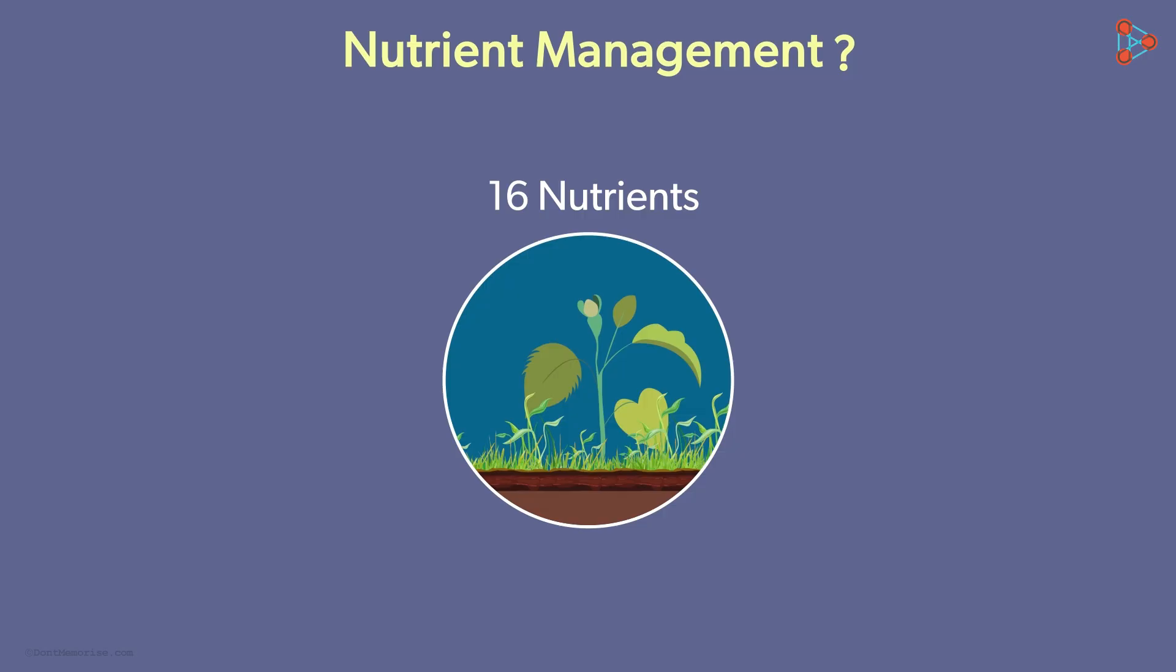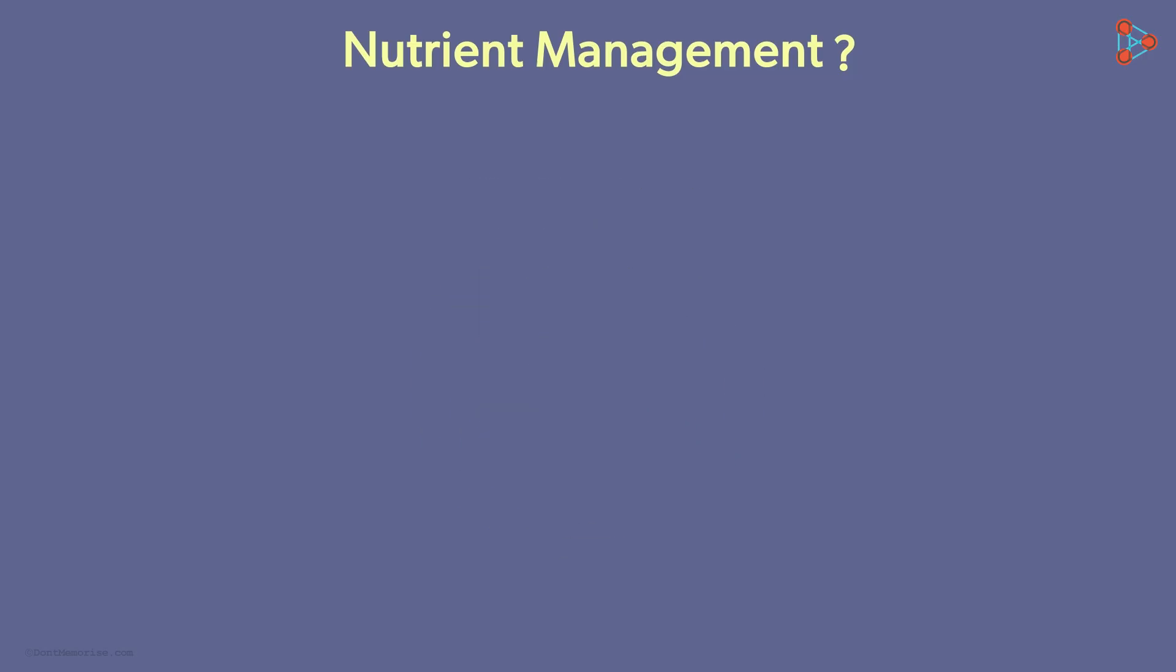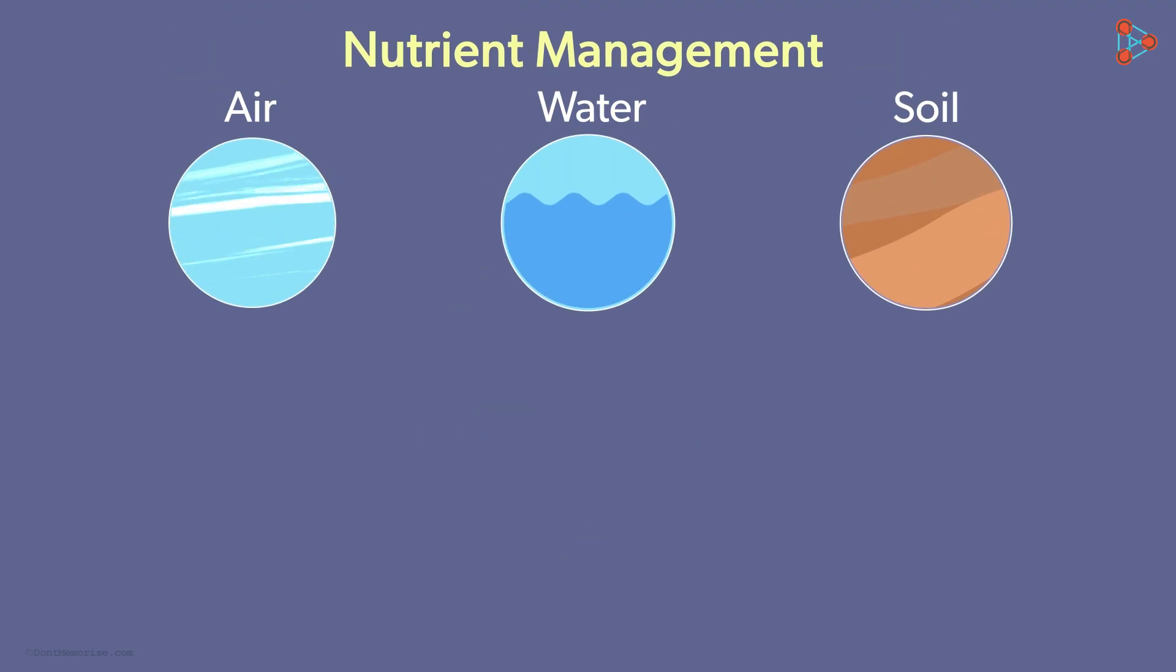From where do you think they get these nutrients? Plants are in contact with the air, water and soil. It must be these very places which provide them with nutrients.